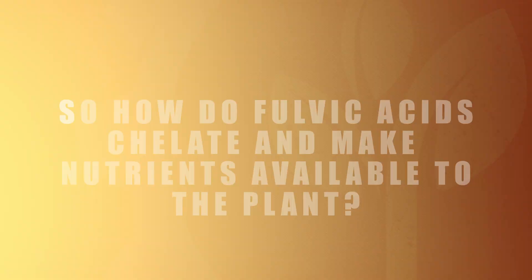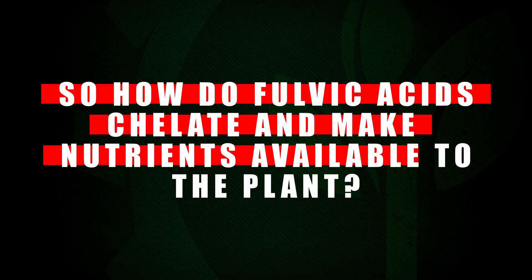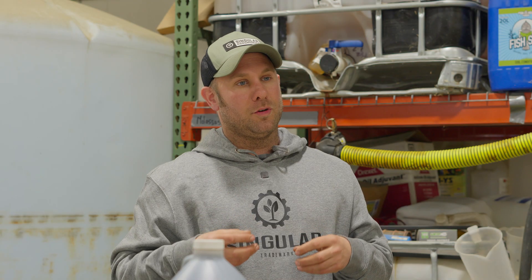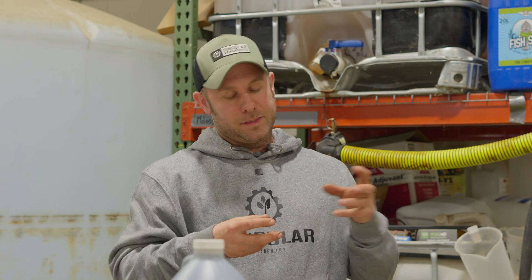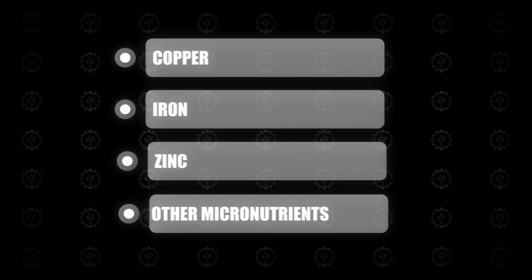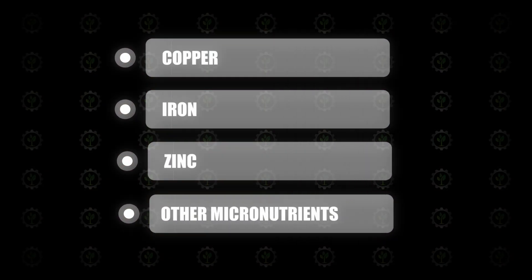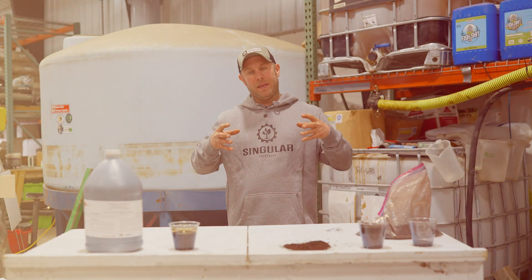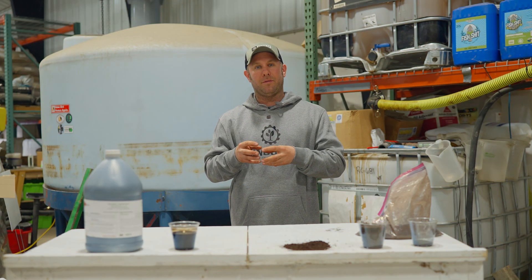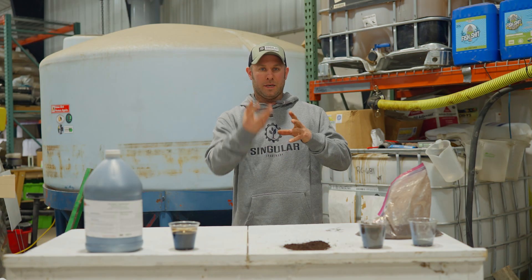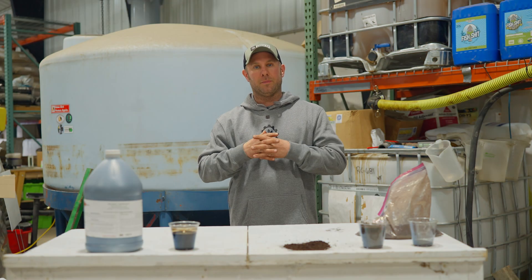So how do fulvic acids chelate and make nutrients available for the plant to uptake? The fulvic acid will form a complex metal ion with copper, iron, zinc, and other micronutrients, making them plant available so the roots can uptake them into the plant.